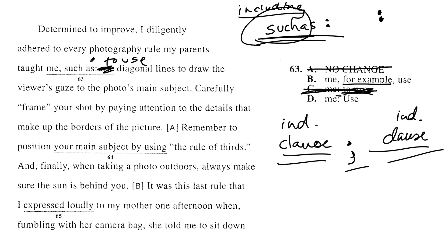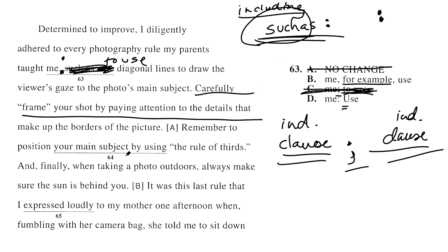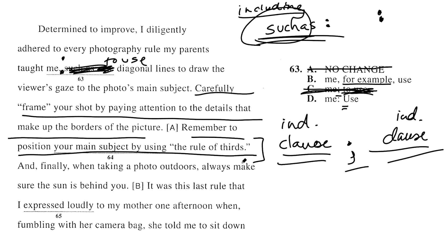Then we have D: 'every photography rule my parents taught me: Use diagonal lines to draw the viewer's gaze to the main subject.' No 'such as.' That works really well — except it's a bit weird that the U is capitalized. But I'm going to keep reading a little bit: 'Carefully frame your shot... Remember to position your main subject using the rule of thirds.' I have a realization — this sentence is setting up a list of sentences that are all the rules, and they're all parallel in structure. So the capitalized U makes it parallel to all those other sentences.